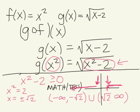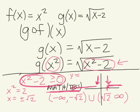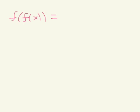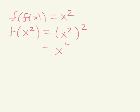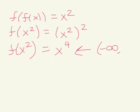For the third problem, we want to find f of f of x. Whatever function comes first, you write that down first — we have x². What we're substituting into this is also x², so we take out x and replace it with x². You multiply the exponents together to get x⁴. Since the result is a polynomial, the domain is negative infinity to positive infinity.